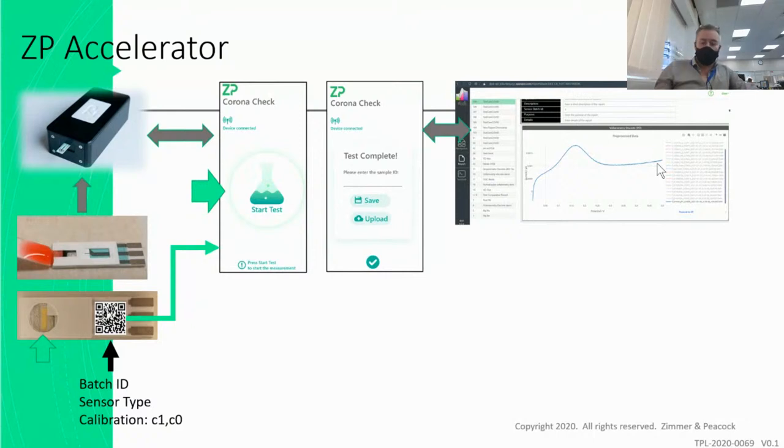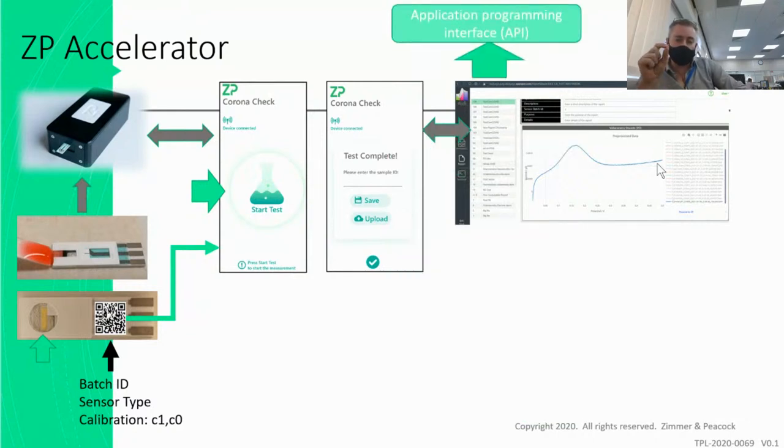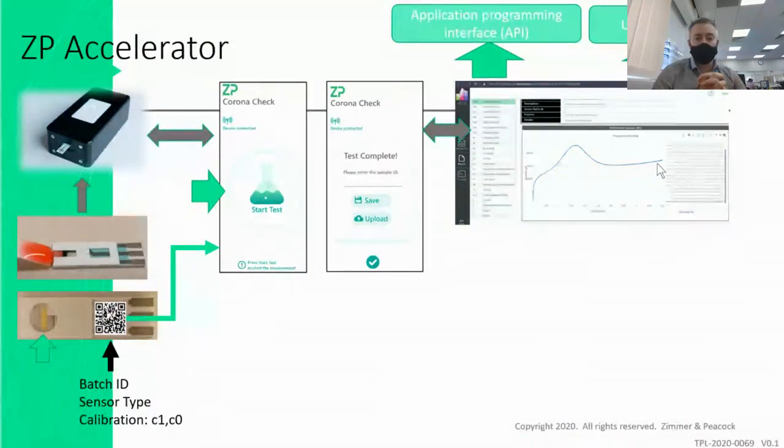And so one of the things we're expecting is that people will actually then be able to access the sensor data using an application program interface, an API. So if you're an Internet of Things developer and you don't want to manufacture the sensor, you don't want to manufacture the electronics, but you're quite happy to receive the data from these sensors, then you can basically use an API to talk to our database or you can log in and get the data that way.